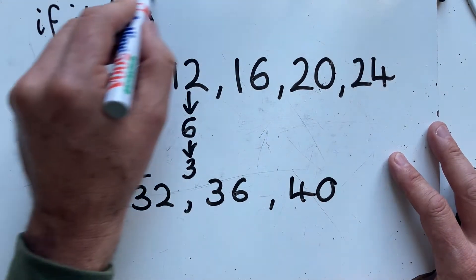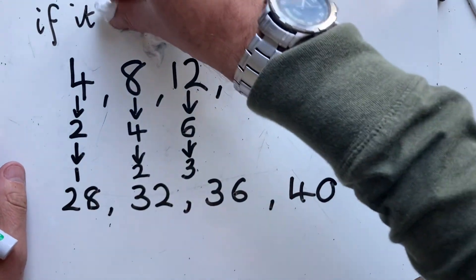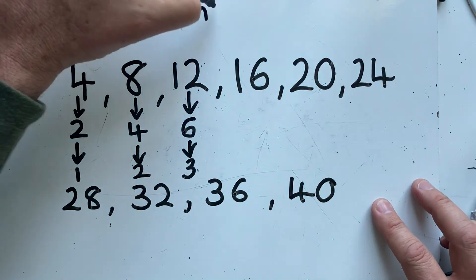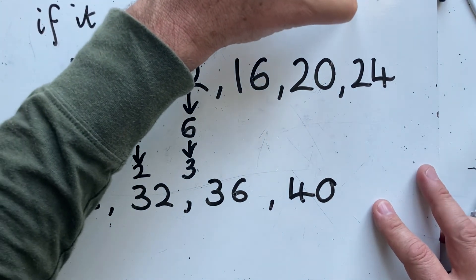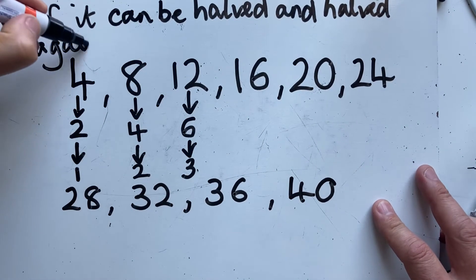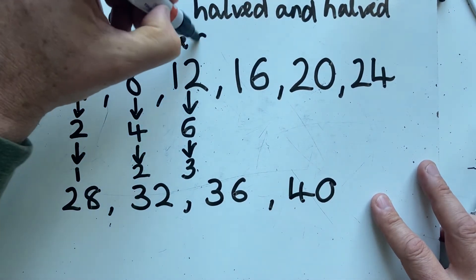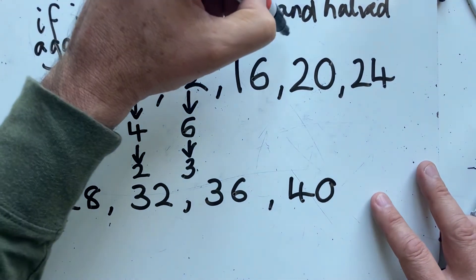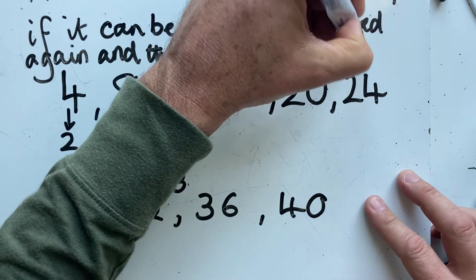So a number is divisible by 4 if it can be halved and halved again and the answer is a whole number.